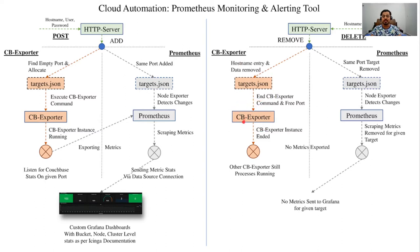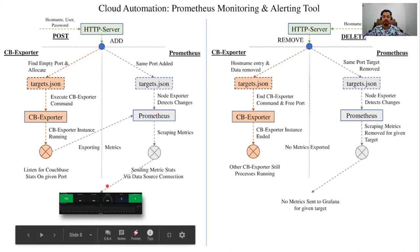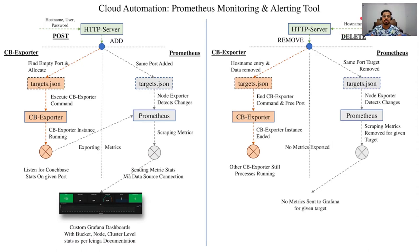Since we dynamically generate the port number, we store it in the target.json file and can run a delete function to remove the Couchbase exporter process. Since node exporter runs alongside Prometheus, it detects dynamic changes in the target.json file. The two target.json files are independent. Stats are displayed in a Grafana dashboard, and for deletion we simply send the hostname to end the Couchbase exporter instance.